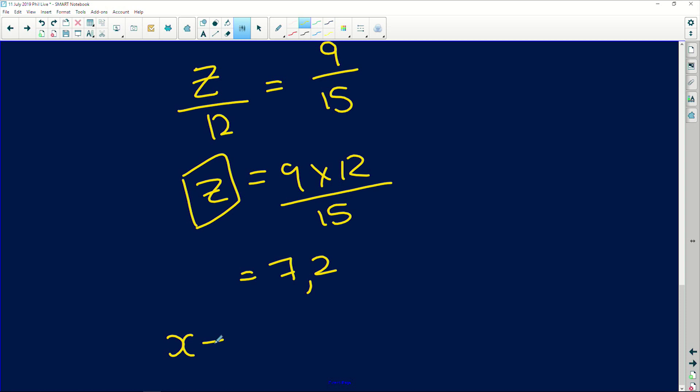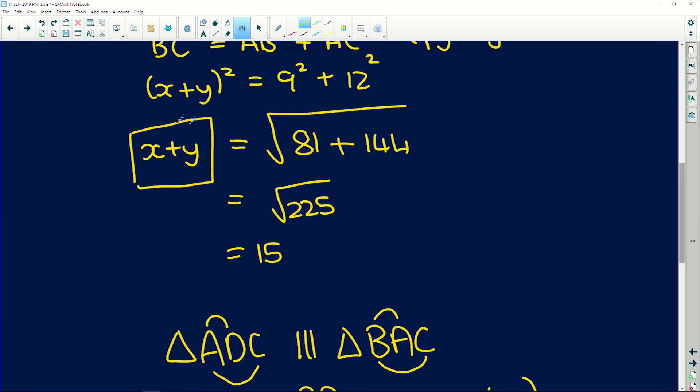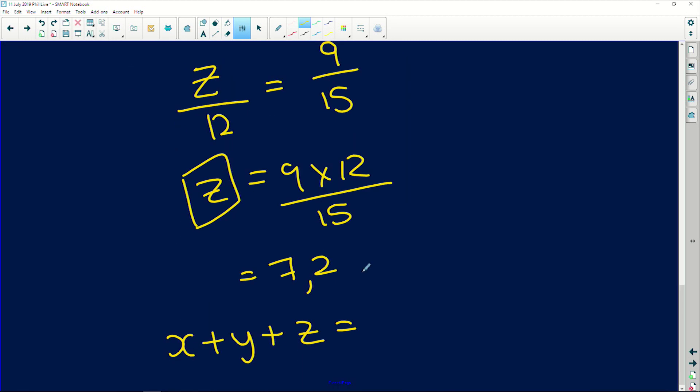Remember, we're trying to find x plus y plus z. So remember, we found x plus y is equal to 15 and z is equal to 7.2. So 15 plus 7.2 is equal to 22.2.